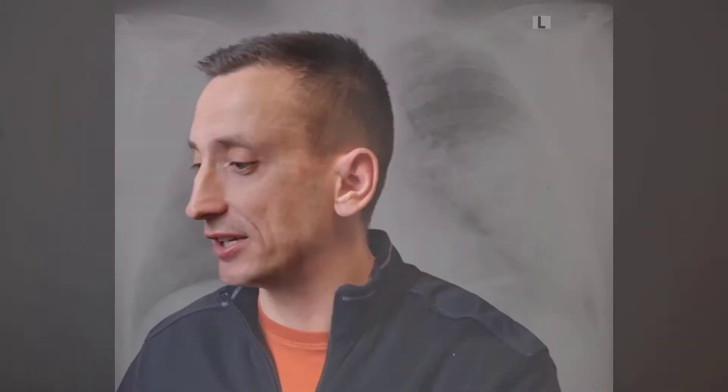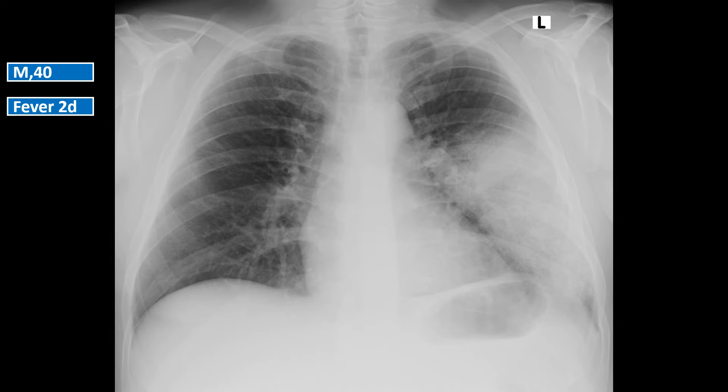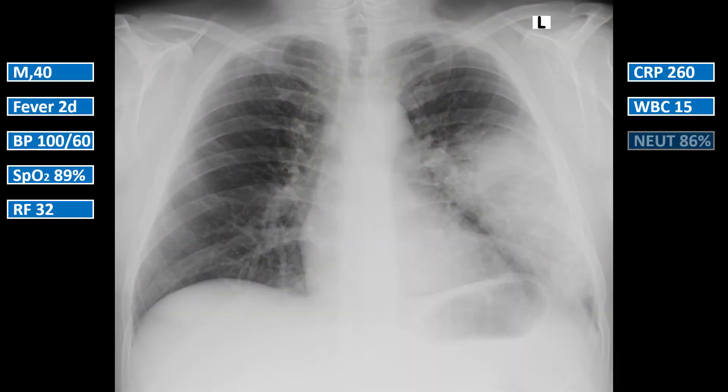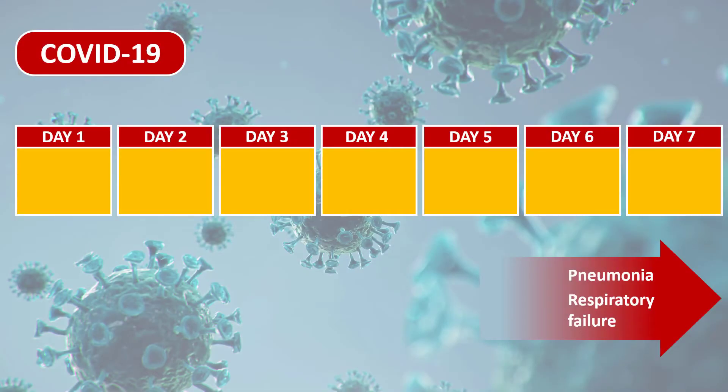Take a look at this chest x-ray: a 40-year-old man with hypertension who suddenly became ill two days ago with high fever, rigors, chills, and diarrhea. His BP is 100 over 60; he's breathing rapidly at 32 breaths per minute. Is this COVID or bacterial? Very high CRP, leukocytosis with neutrophilia, lobar pneumonia on x-ray. Notice how quickly all of this happened — even before seeing the lab results and x-ray, this is highly unusual for COVID pneumonia.